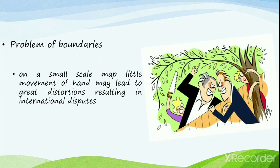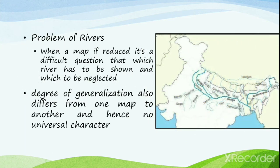Generalization of boundaries is also a difficult task. On a small-scale map, a small movement of the hand may lead to great distortion, resulting in international disputes — such as the major disputes between India, China, India-Pakistan, and many countries around the world. The generalization of rivers and other hydrological data also poses a serious problem. When a map is reduced, it is very difficult to decide which rivers must be shown and which must be eliminated. The degree of generalization also differs from one map to another.